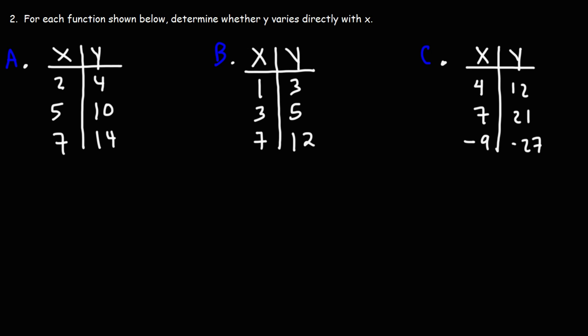Now let's work on this problem. For each function shown below, determine whether Y varies directly with X. So we're given the data in a table. How can we find the answer? The key is to calculate the constant of variation, K. Keyword constant.